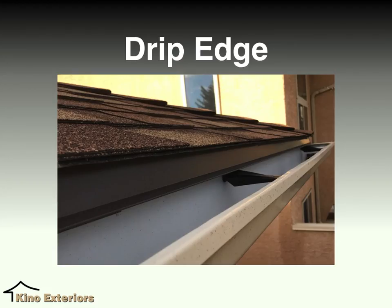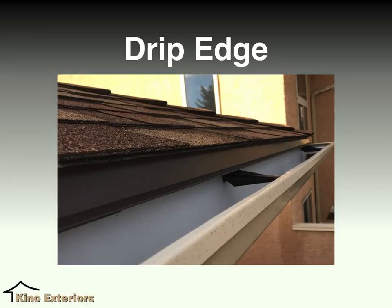Now the drip edge. The drip edge, as seen in the image, is a metal strip that goes just below the roof line, just below the shingles. It helps the water get into the gutter easier. It also helps prevent the roof deck just under the shingle from deteriorating or curling over time, because it does get wet if you don't have that drip edge installed.